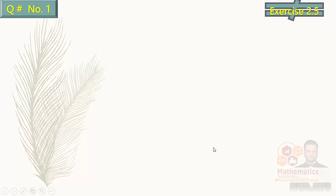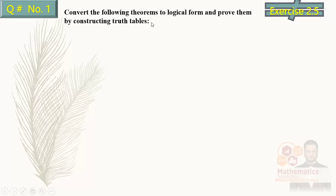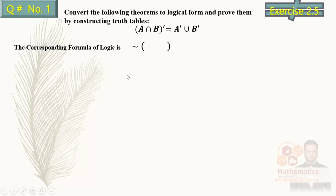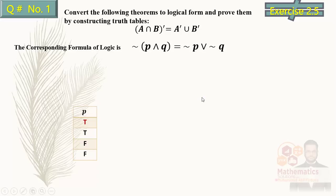Now question number 1: you have to convert the following theorem to the logical form by constructing a truth table. This is actually De Morgan's Law — A-complement union B-complement. First we convert to logical form: complement becomes negation, A becomes P, intersection becomes AND, B becomes Q on the left side. On the right side, A-complement gives negation of P, union gives OR, and B-complement gives negation of Q. Let's build the truth table now.